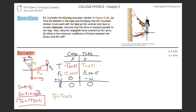For the x equation: F sub L cosine of 15 minus T sine of 31 equals zero. For the y equation: T cosine of 31 plus F sub L sine of 15 minus W equals zero. Now take a step back and look at what we've got — two equations and two unknowns. That's why we can solve this using a system of equations.